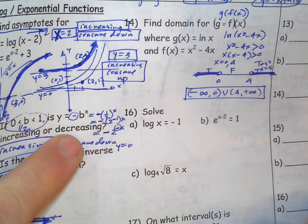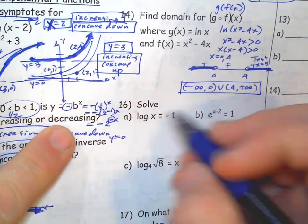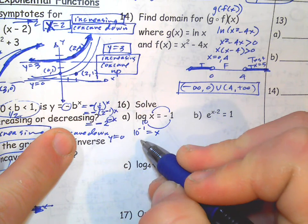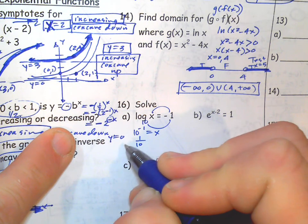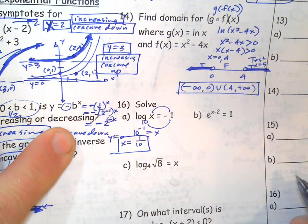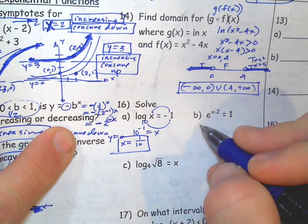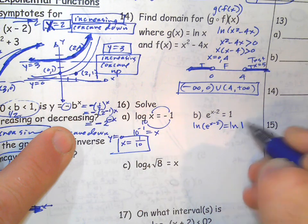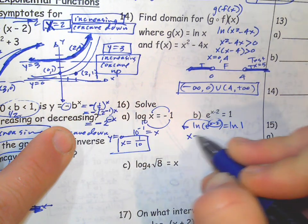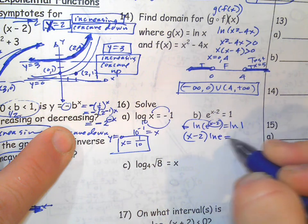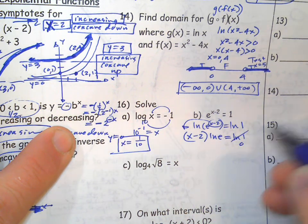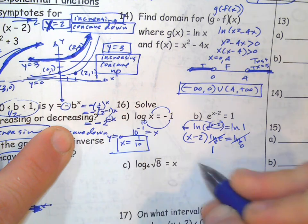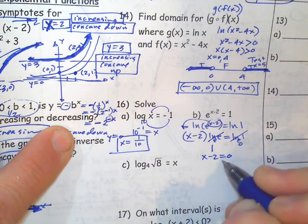Solve these log and exponential equations. If solving a log equation, rewrite it in exponential form: 10^(−1) = 1/10. If it's exponential, use natural log on both sides to bring the exponent out front: (x − 2) · ln(e) = ln(1). ln(1) is 0 and ln(e) is 1, so x − 2 = 0, giving x = 2.